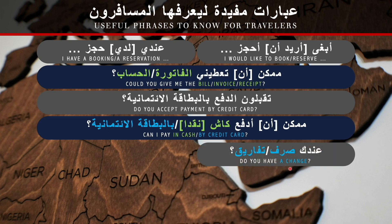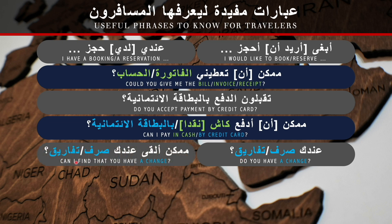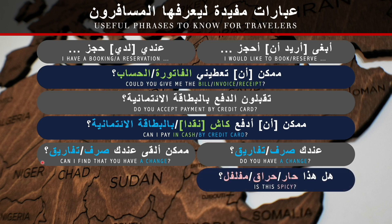'Do you have change?' In Modern Standard Arabic: عندك صرف (masculine) / عندك صرف (feminine). In today's spoken dialects we use صرف or تفاريك — especially in Saudi Arabia: عندك تفاريك. Or: ممكن أن أجد لديك صرف? In Saudi dialect: ممكن ألقى عندك صرف or ممكن ألقى عندك تفاريك.